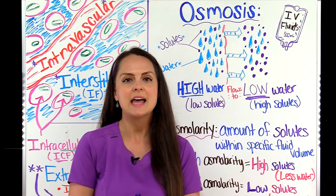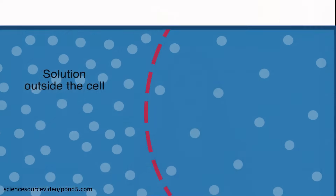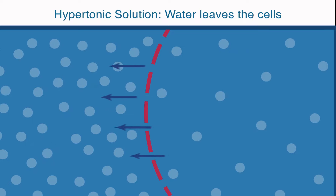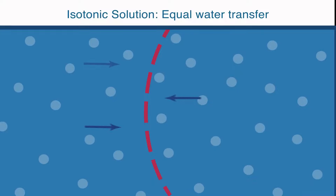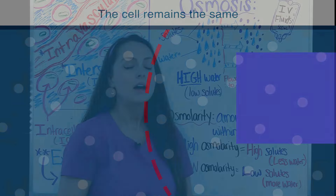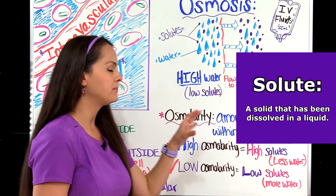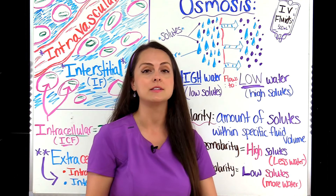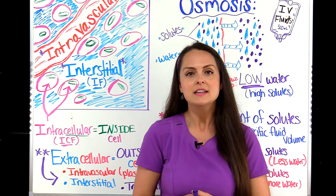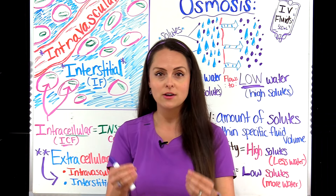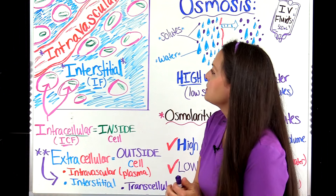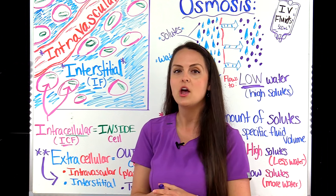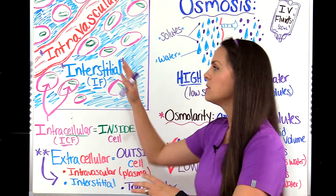The big takeaway from osmosis is that this process is highly influenced by a fluid's solute concentration. Depending on how concentrated the fluid is with solutes will determine how osmosis affects how water shifts from the extracellular space to the intracellular space, or vice versa. So what is a solute? A solute is a solid that has been dissolved in a liquid. Many different substances can become a solute, such as sodium and chloride. When sodium and chloride dissolve in liquid they become an electrolyte, but they are still a solute in that fluid.